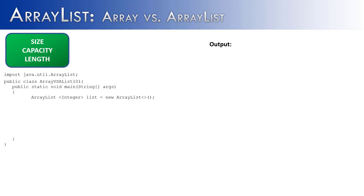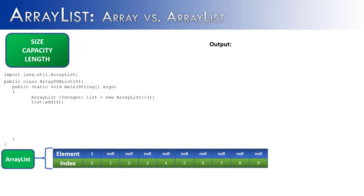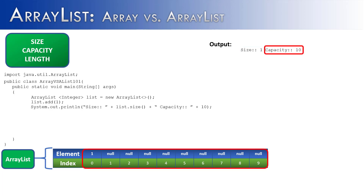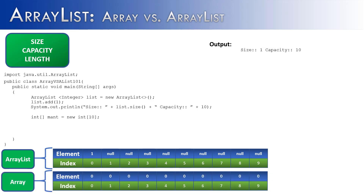Arrays and array lists have different ways of measuring their length. For an array list, I've created one called list, added one value to it, and if we output its size and capacity, it would say size is 1 and capacity is 10. Size shows how many elements are inside, and capacity shows how many possible elements can be stored at this time. For an array, the length of 10 indicates both the size and total capacity, accessed via the length field.